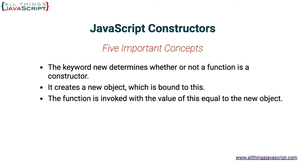Third, the function is invoked — all the code inside that function becomes invoked. The value of this is equal to that new object, so anything we put inside that function that references this is going to act on that new object. The code inside the function doesn't have to always act on the new object; it could be doing other things, but when we use the value of this, we're affecting that new object.